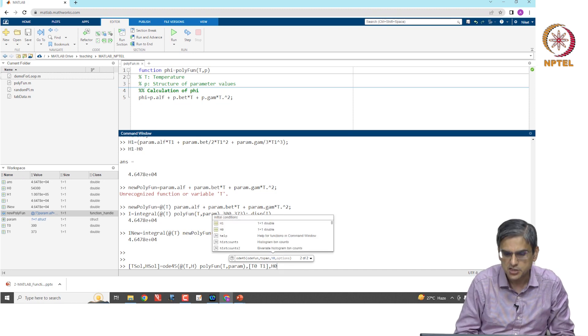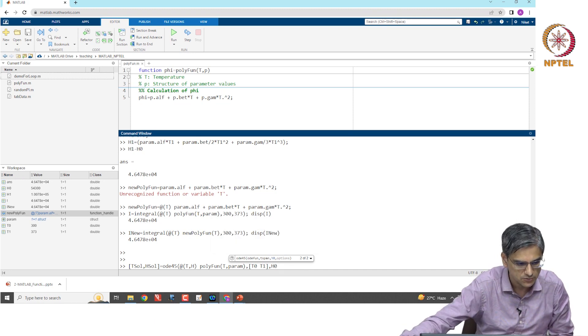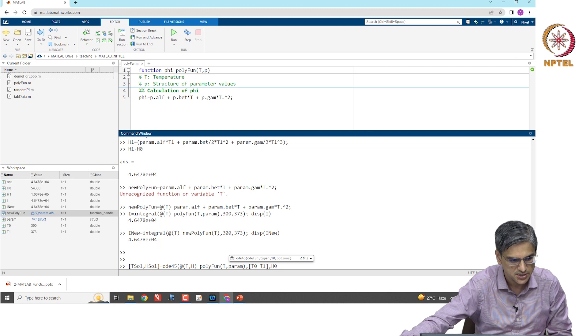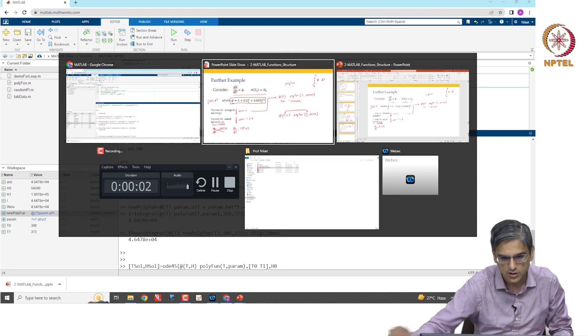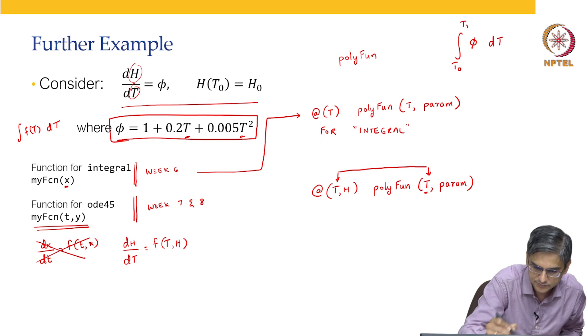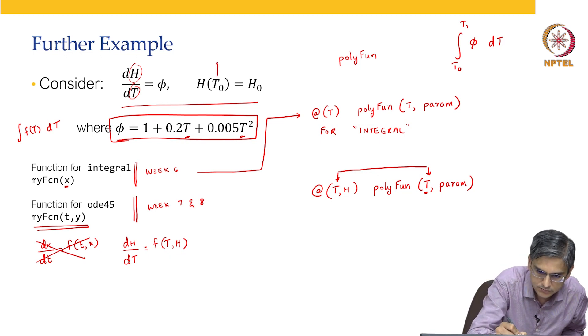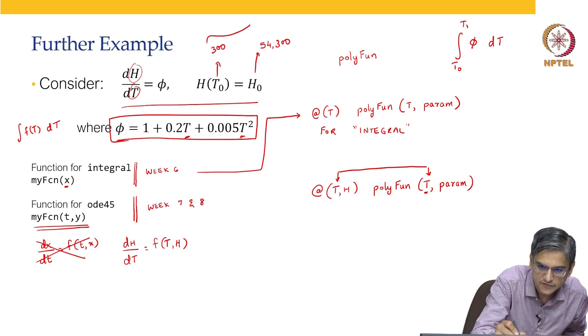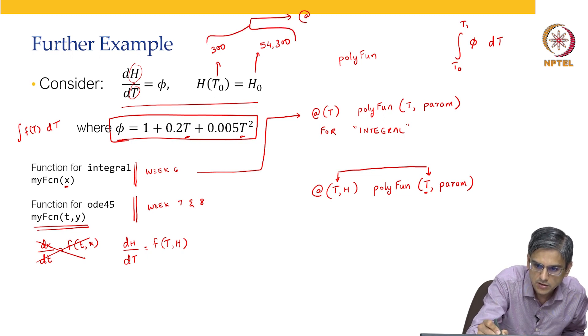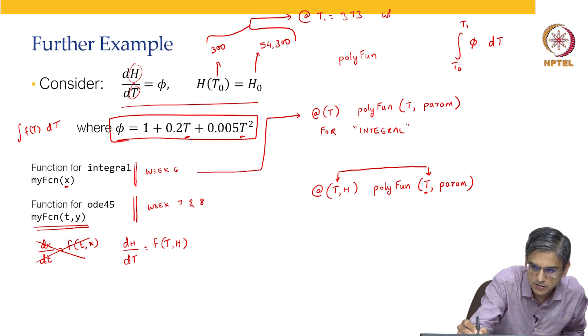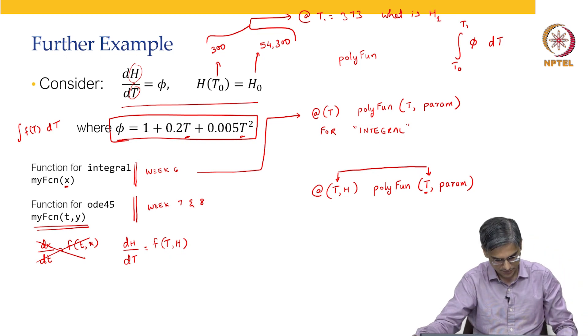What is the initial value? The initial value is h at t0 that we had calculated over here. So h0 is 543. Let us say where t1 equal to 373, what is h1?